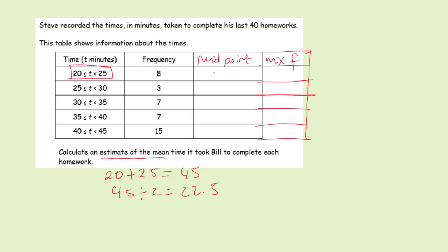That's 22.5. Now let's calculate all these midpoints. We're going to add 25 and 30 and that gives us 55 divided by 2 which is 27.5.